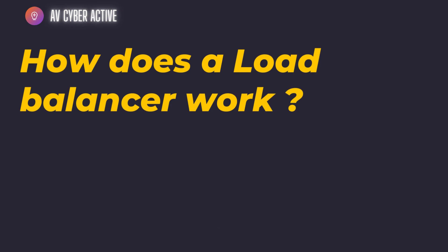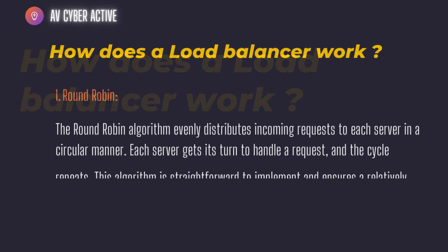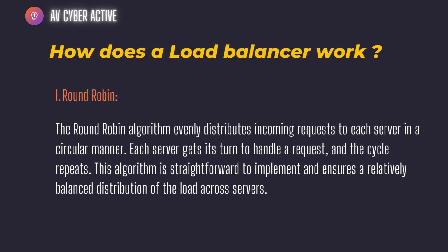Have you ever thought about how load balancers work? Well, they are machines and they have built-in algorithms that make them run. Let's check five of them one by one. The first and most simplest of all the algorithms is round robin. The round robin algorithm evenly distributes incoming traffic to each server in a circular manner. Each server gets its turn to handle a request and the cycle repeats all over again. This algorithm is straightforward to implement and ensures a relatively balanced distribution of load across all your servers.